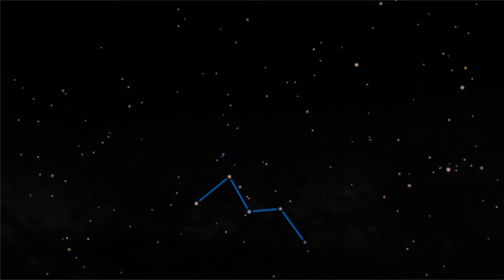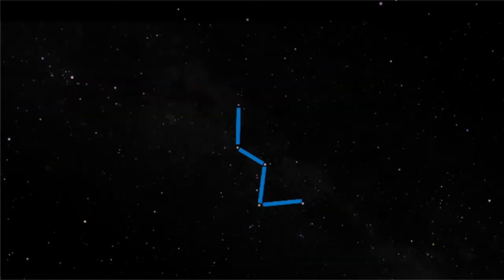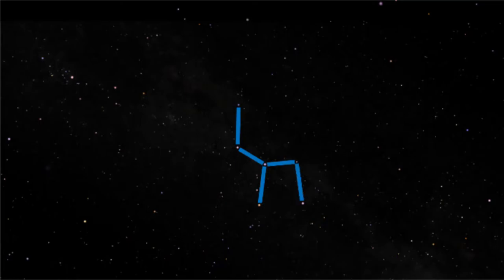The truth is that the ancients may have seen this constellation differently than we do. If we add an additional star to the constellation and redraw the lines, it's much easier to see this as a throne fit for a queen.